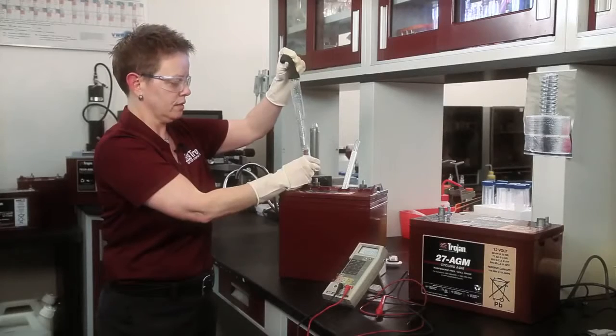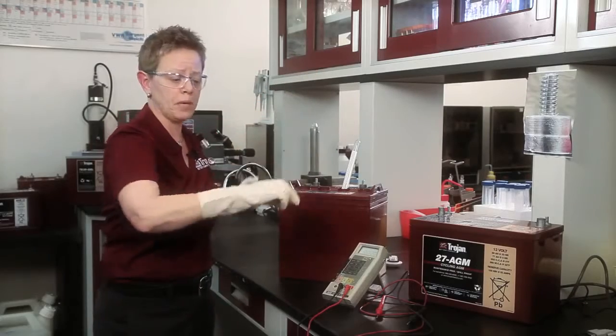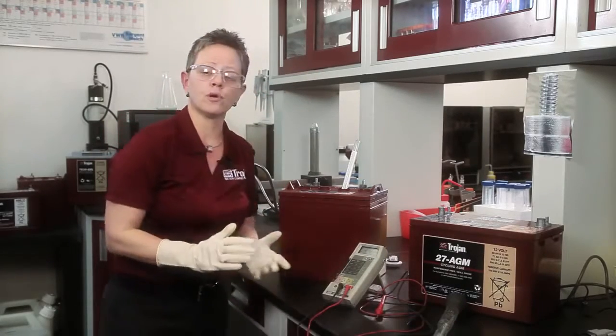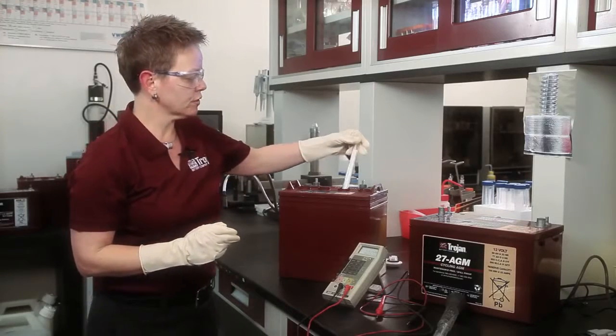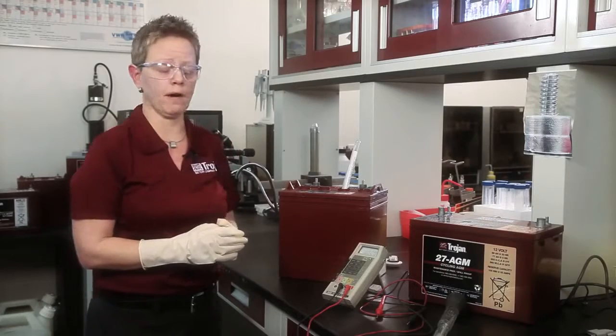You then aspirate the electrolyte back into the cell, being careful not to get anything on you, and you would repeat this procedure for the remaining cells in the battery. You would record the values and also record the temperature, because as I said previously, you do need to temperature-correct the specific gravity.